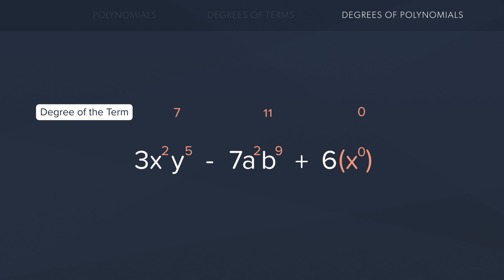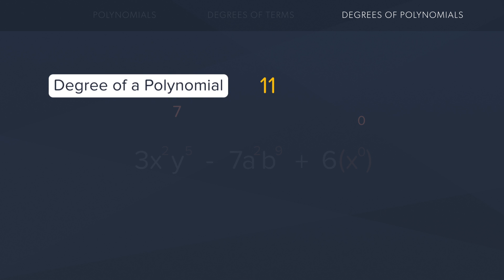You look at the degree of each of the terms, you compare them, and then you just choose the highest number. So of course 11 is bigger than 7 which is also bigger than 0. So 11 is the degree of our polynomial.